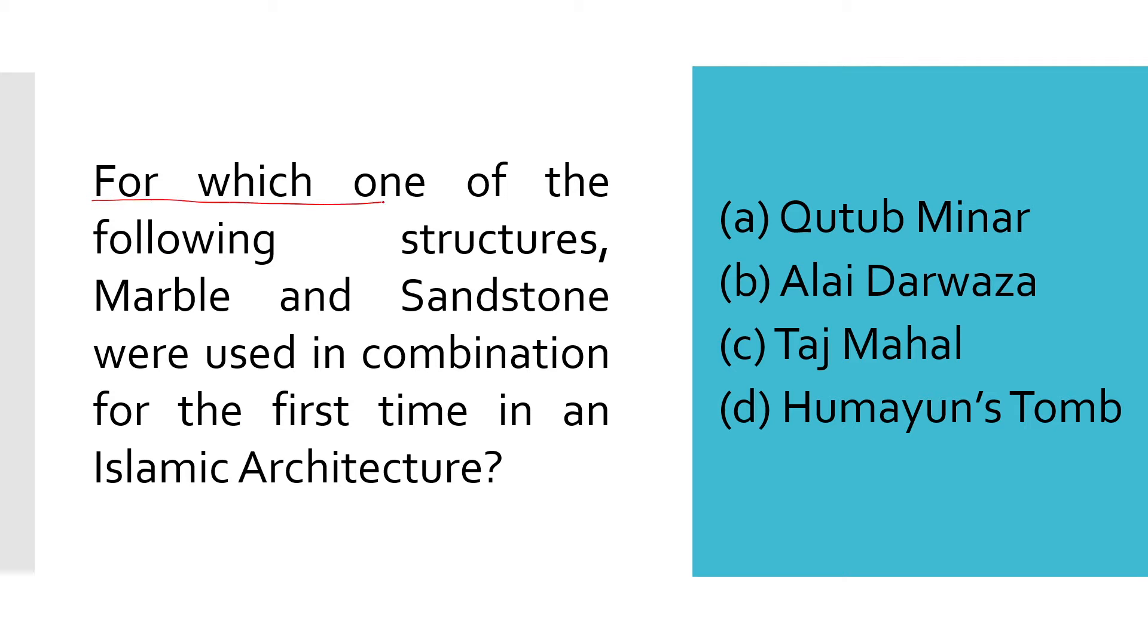Next: For which one of the following structures were marble and sandstone used in combination for the first time in Islamic architecture? Options are Qutub Minar, Alai Darwaza, Taj Mahal, or Humayun's Tomb. The correct answer is Qutub Minar.